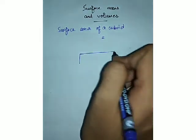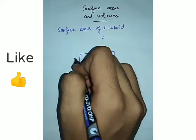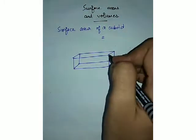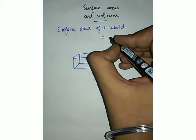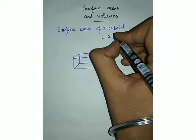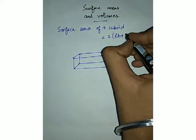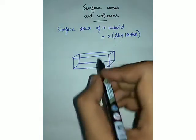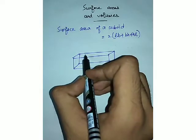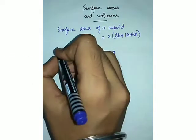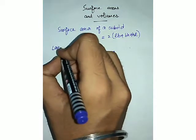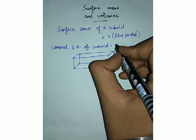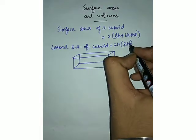If we draw a rough diagram of a cuboid, you can see that the length is different, the breadth is different, and the height is different. So this is basically a cuboid. If l, b, and h are length, breadth, and height respectively, then the surface area of a cuboid is 2(lb + bh + hl). Now if the top face of the cuboid is removed and not taken under consideration, the formula becomes the lateral surface area of cuboid, which is 2h(l + b).